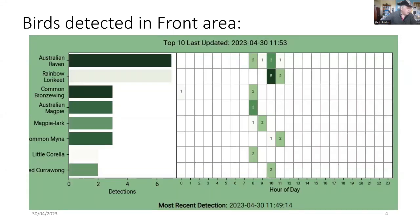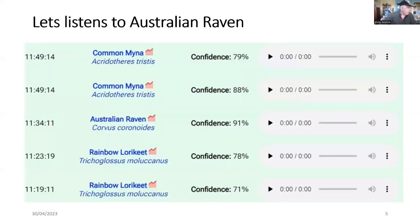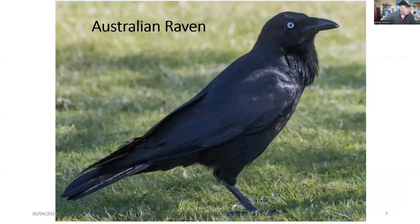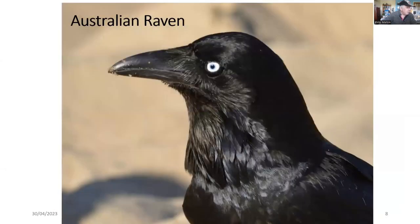This is it in closer detail. We'll have a look at the Australian raven. You can go back and listen to the recordings of that. Here's the spectrogram of the Australian raven, and if you look that up on the internet you can see what it looks like — and there it is, a closer look.